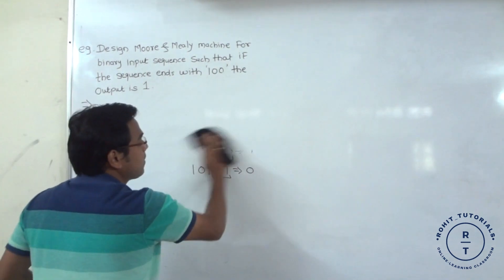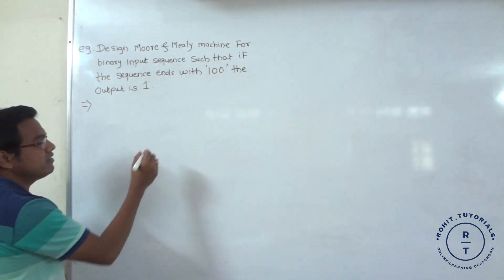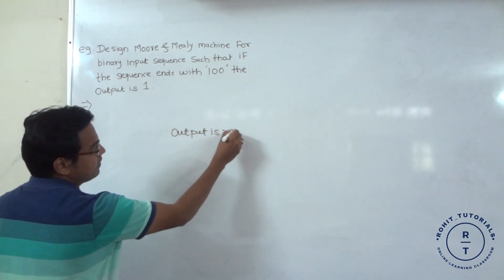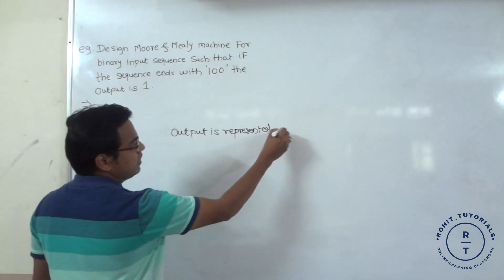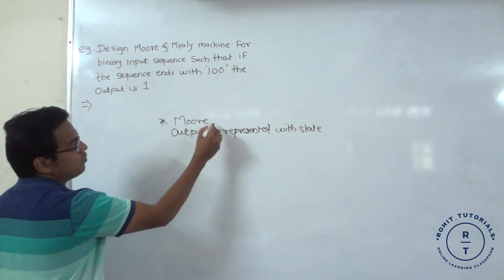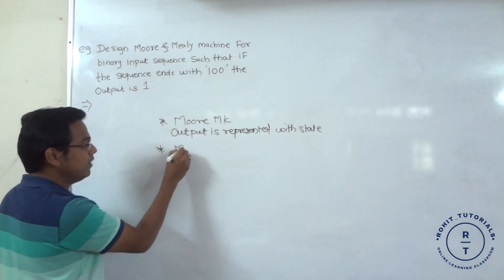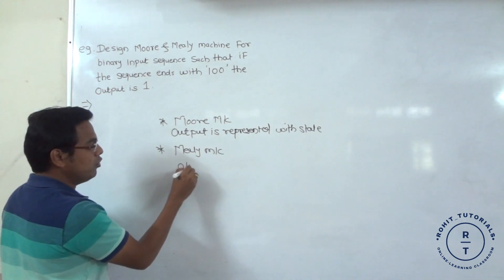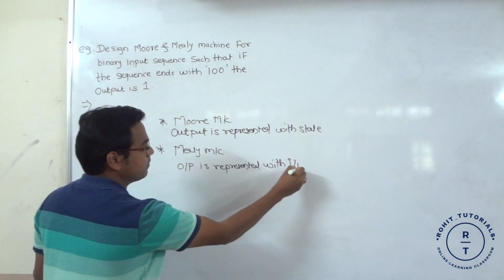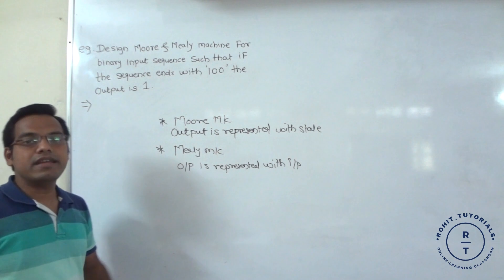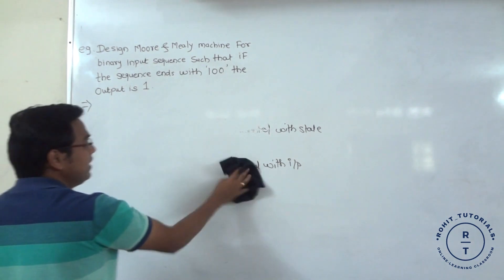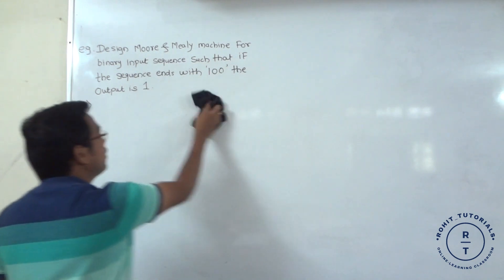When we consider the Moore machine, the output is represented with the state. This is the key property of the Moore machine, whereas in the Mealy machine the output is represented with the input — already covered in our previous videos. The given problem states that whenever the string ends with 100, we get the output as 1.